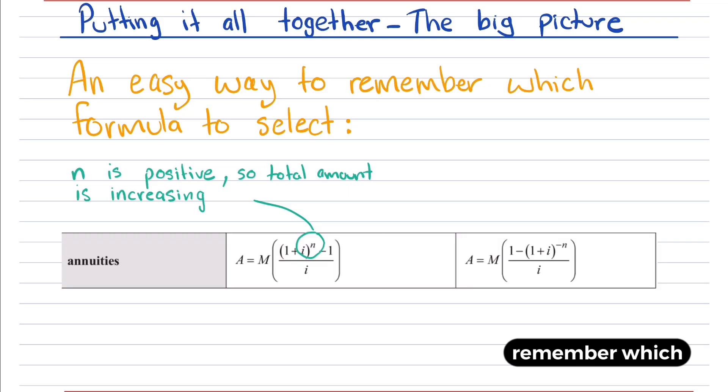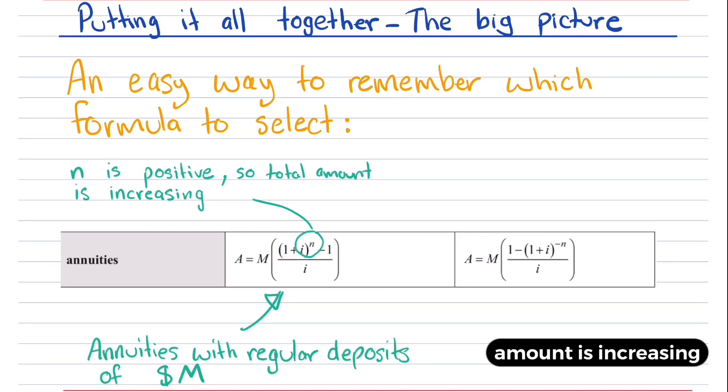An easy way to remember which formula to select: notice that if N is positive, then that means the total amount is increasing. So that would be linked to an annuity question where someone was making regular deposits, and the regular deposits are actually just the M value in this situation.